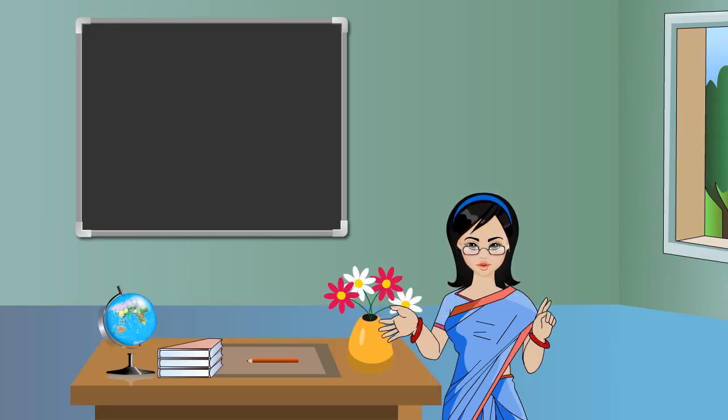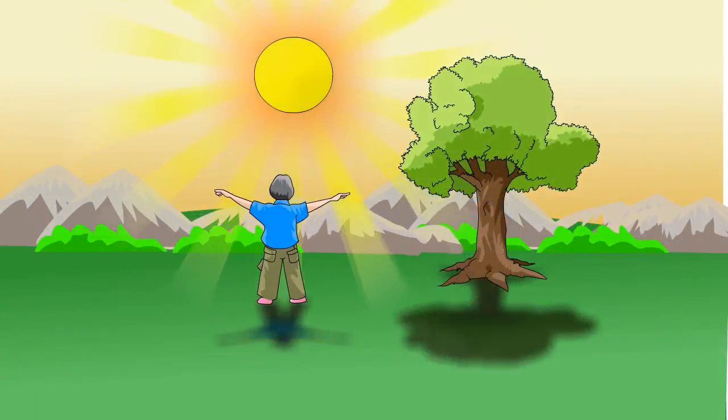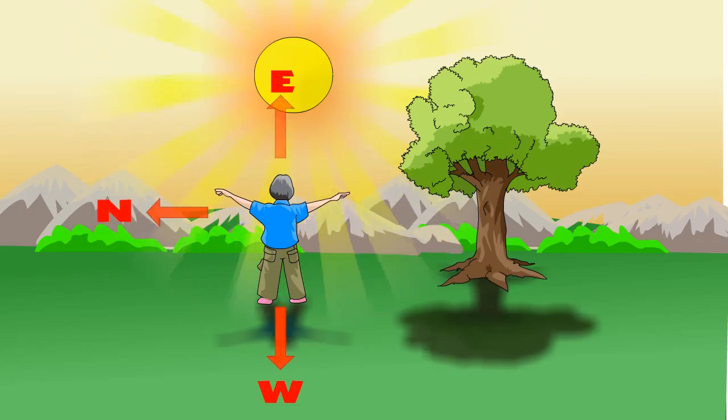East, West, North and South. To find out these directions, stand facing the direction in which sun rises. This is East direction. Behind you is the West direction. In this position, your left hand points the North direction and right hand points to the South.